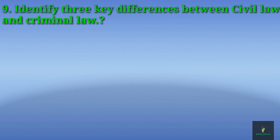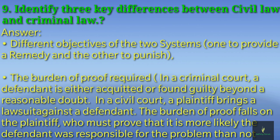The next question: identify three key differences between civil law and criminal law. First, the different objectives: in civil law the objective is to obtain a financial claim, but in criminal law the objective is to provide punishment. Second, the burden of proof: in a criminal court, a defendant is either acquitted or found guilty beyond a reasonable doubt.